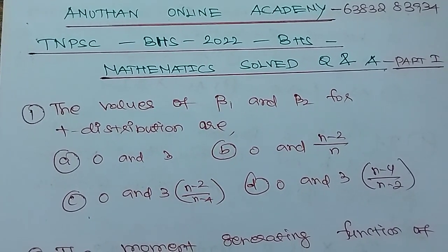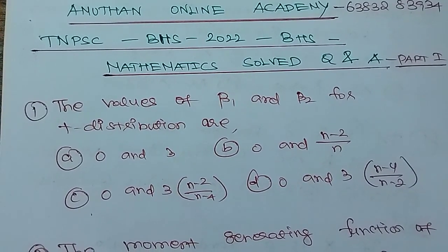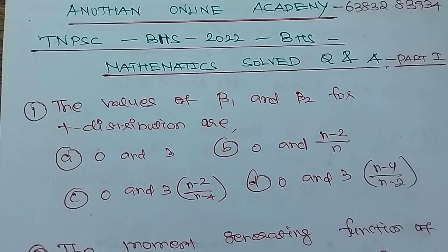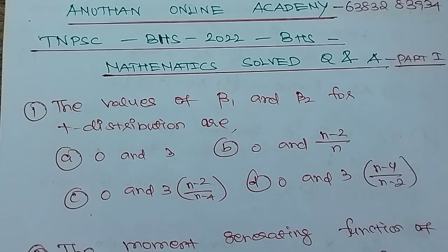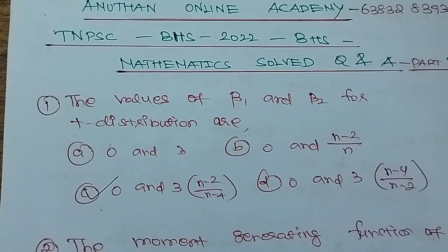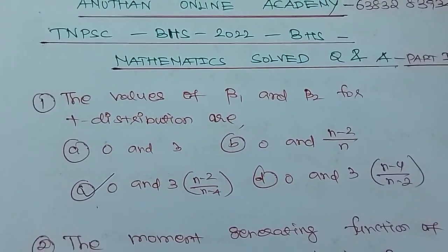The values of beta1 and beta2 for the t-distribution. Four options are given. The value of beta1 is 0. The value of beta2 is 3(n-2) divided by (n-4). This is a property of the t-distribution. Option C is the correct answer.